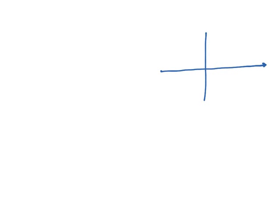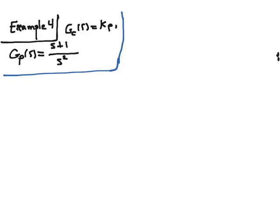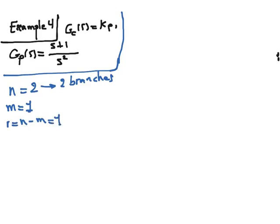I will draw the root locus for both of them here — for negative values of k_p (NL) and for positive values (PL). So here we have two poles, n is equal to 2, both of them are located at the origin. And m is equal to 1, we have one zero located at minus 1. We will have two branches for positive locus and two branches for negative locus.